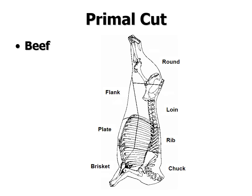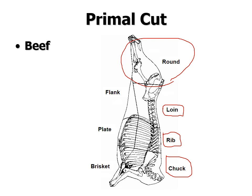Starting with beef primal cuts: the back leg cuts are all called the round. Moving forward toward the head of the carcass, cuts with the lumbar and sacral vertebrae are the loin — a lot of those cuts have the word 'loin' in them. Cuts with ribs come from the rib primal. The front shoulder is called the chuck. Between the front legs is the brisket, great for barbecue.